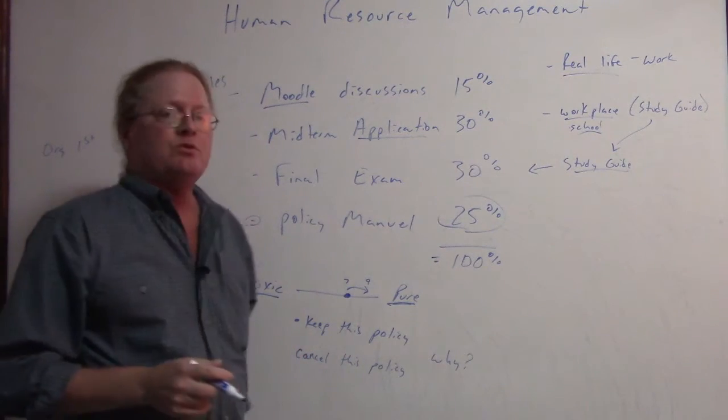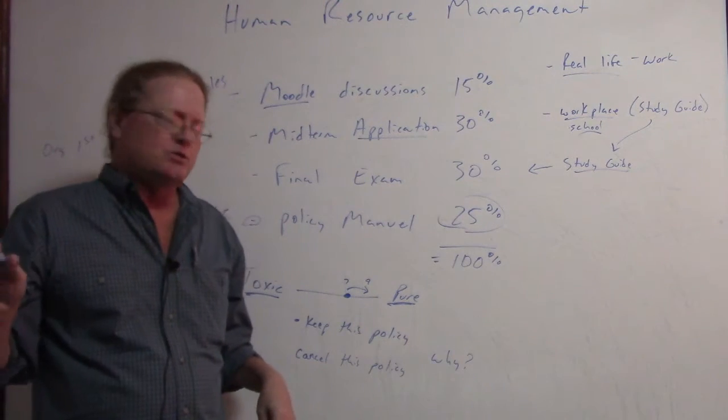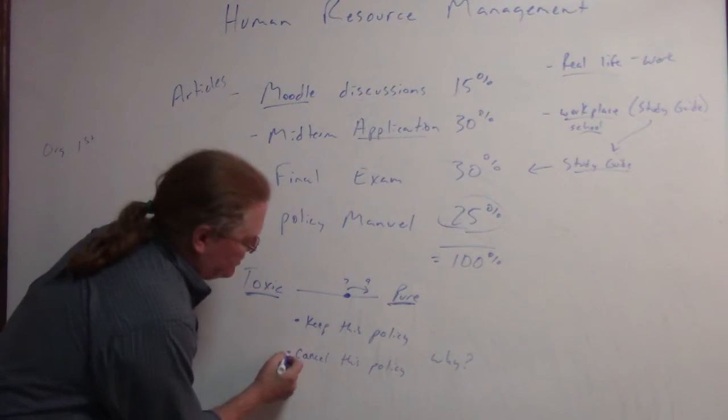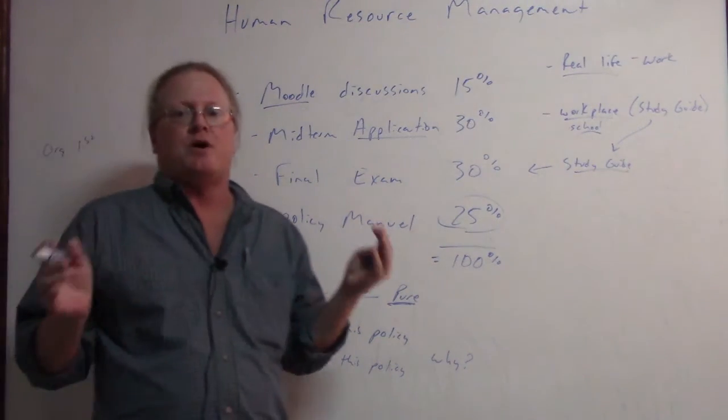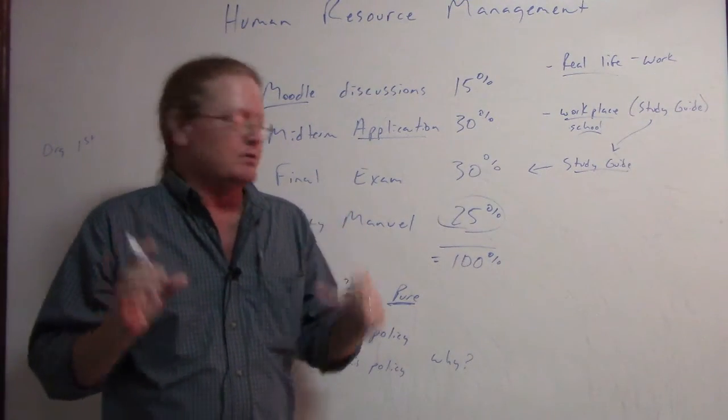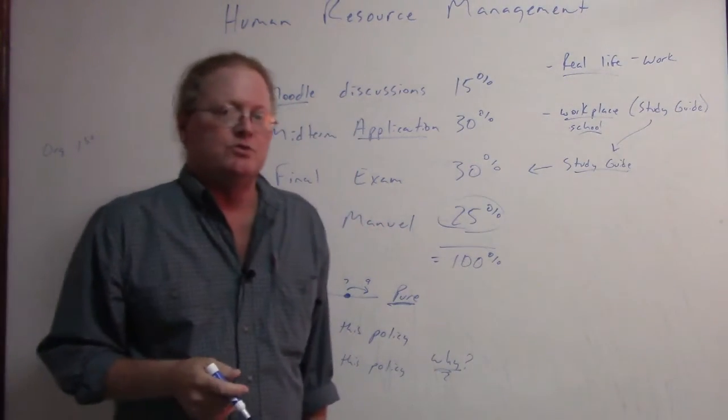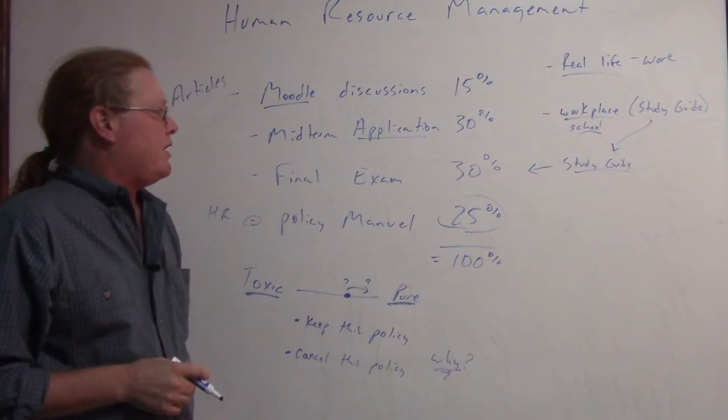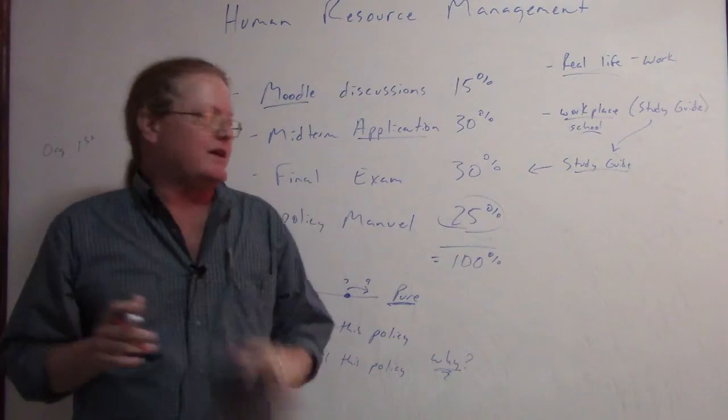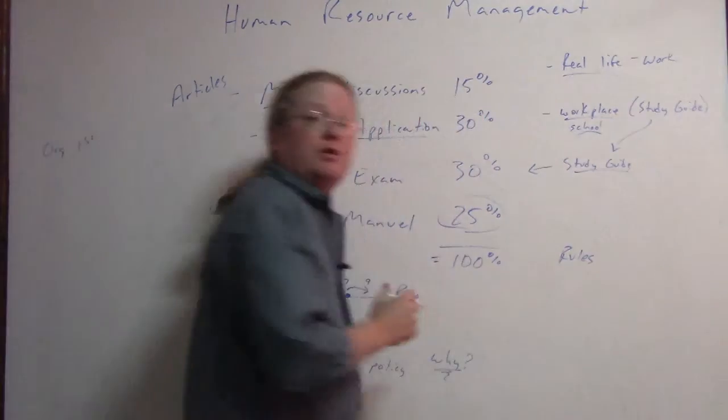The process will be going through the policy manual and saying 'hey I kind of like this policy. I like the way it's worded. It's pure' or 'is it toxic and I want to cancel this policy. This section of the policy manual makes me feel like a three-year-old.' So we could get rid of that. And then you explain why you did what you did.